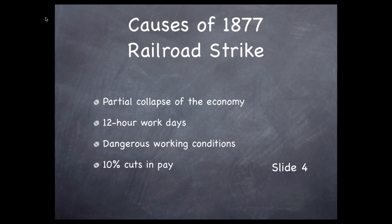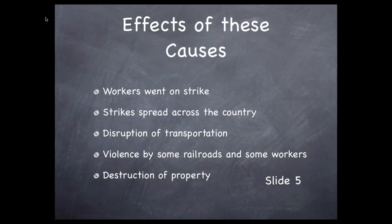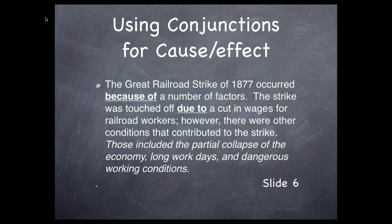Let's look again at the causes of the 1877 strike: there was a partial collapse of the economy, 12-hour workdays were required, dangerous working conditions, and pay was cut by 10%. Now let's look again at the effects: workers went on strike, strikes spread across the country, transportation was disrupted, and there was violence by some of the railroad companies and some workers, and property was also destroyed. Now we carefully join some causes with effects, being sure to communicate that this is no simple cause-effect relationship. The Great Railroad Strike of 1877 occurred because of a number of factors. The strike was touched off due to a cut in wages. So 'because of' and 'due to' are the conjunctions that put that cause and effect together.